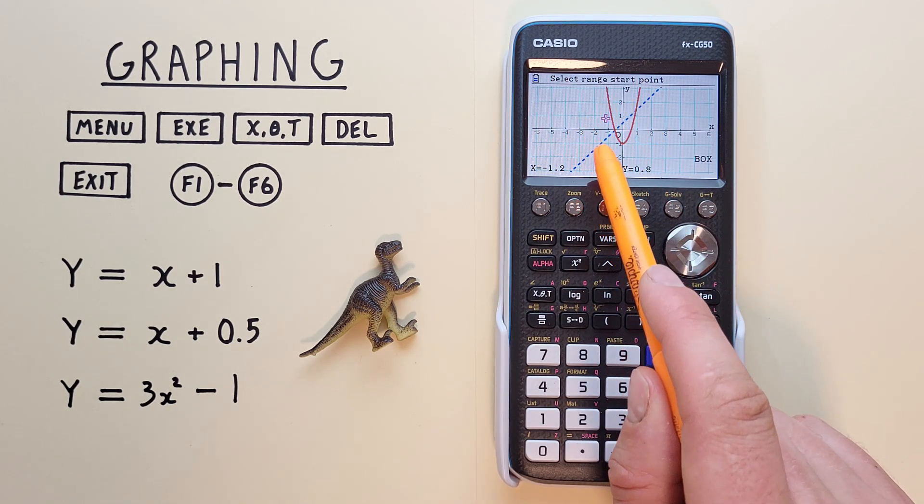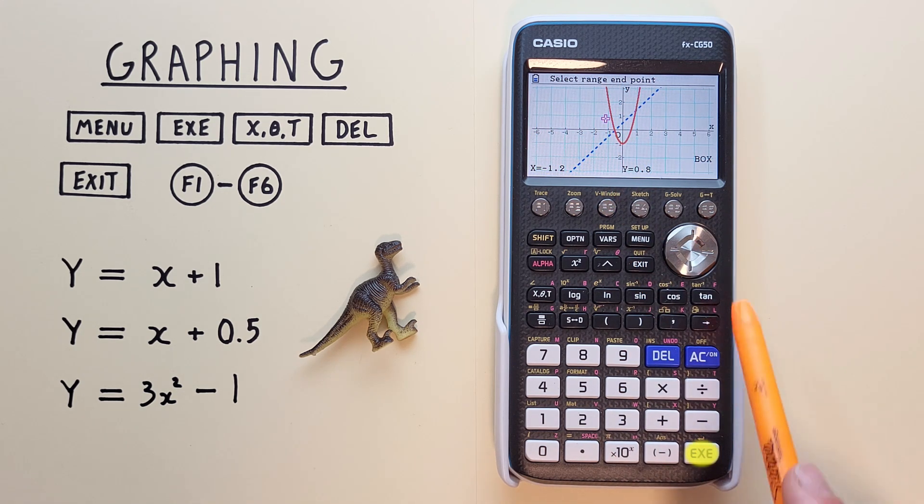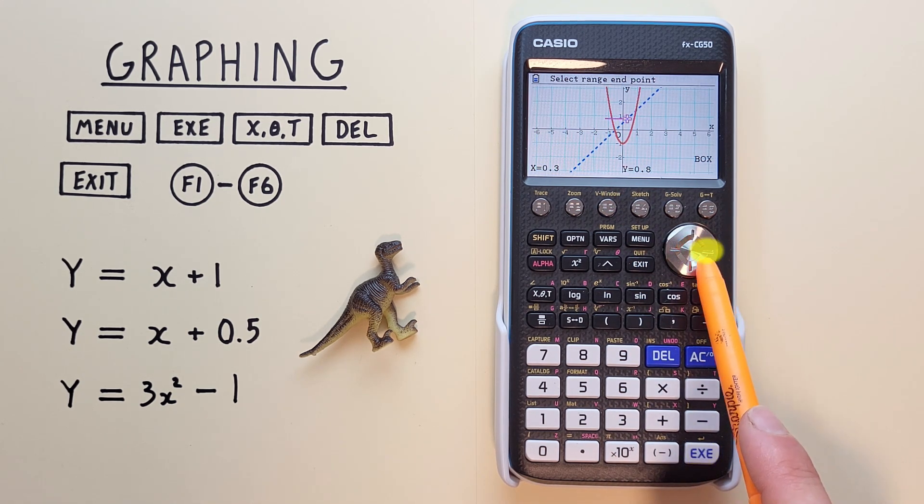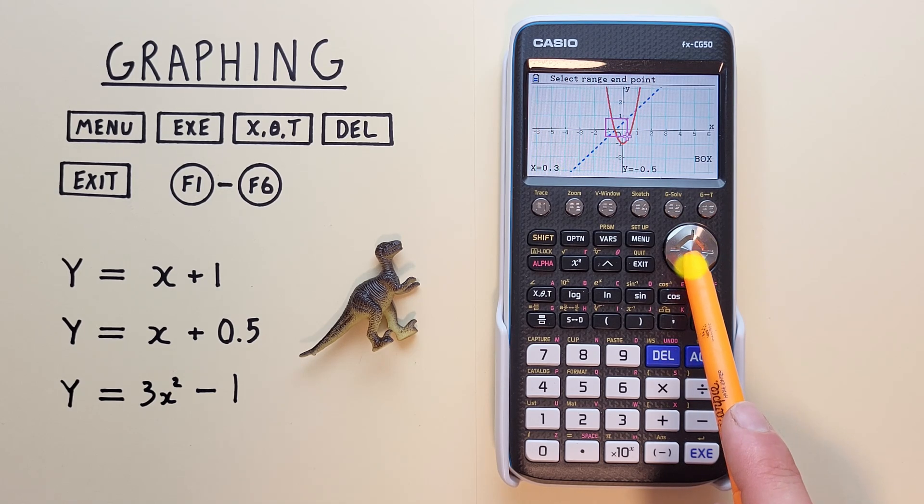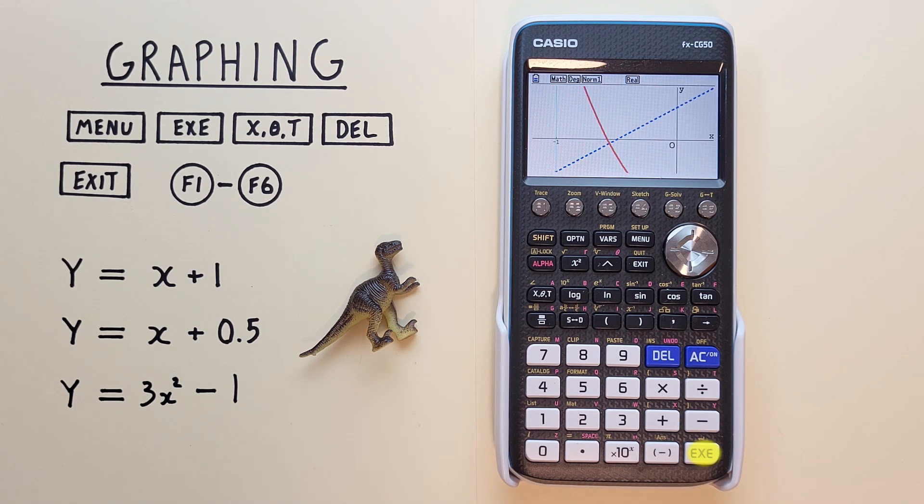Let's use it to zoom in on this section here. So we put it in the corner, press the EXE key, and then scroll over to highlight the section we want to zoom in on. Once we've got it, we hit EXE again, and we've zoomed in on our new box section.